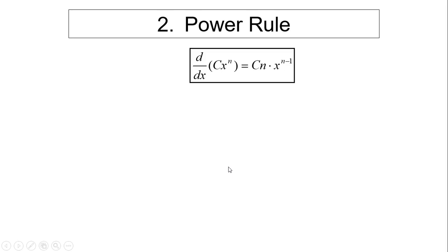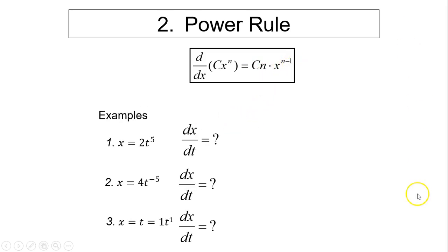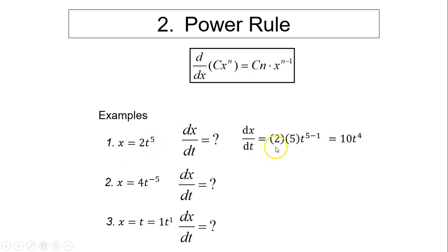Next is the power rule — the most used rule. The power rule states: for c times x to the power of n, the derivative equals c times n times x to the power of n minus one. For example, x equals 2 times t to the fifth — here c is 2 and n is 5.